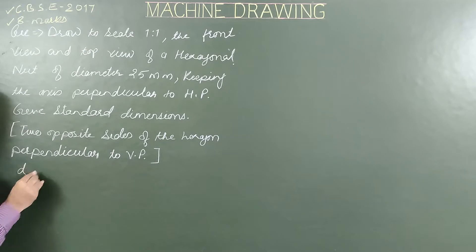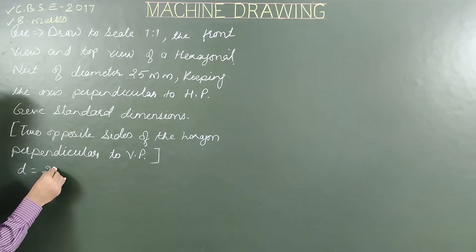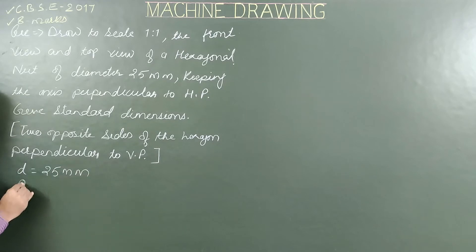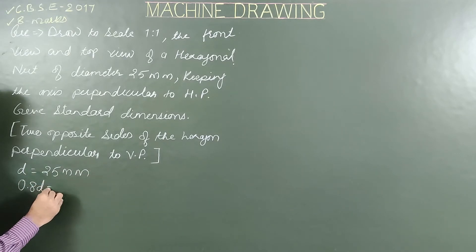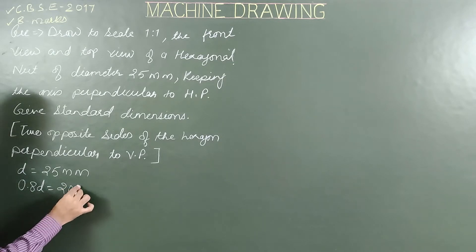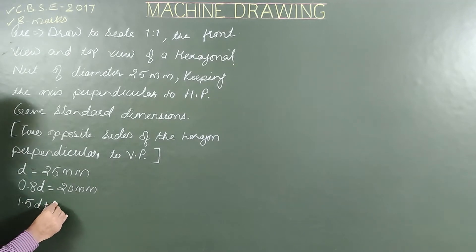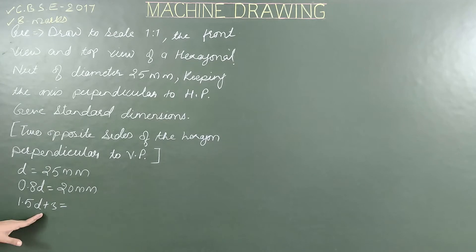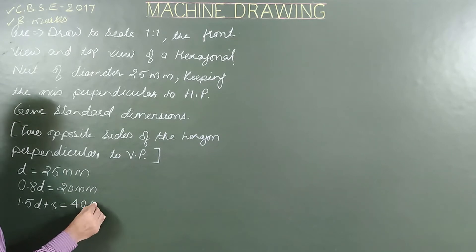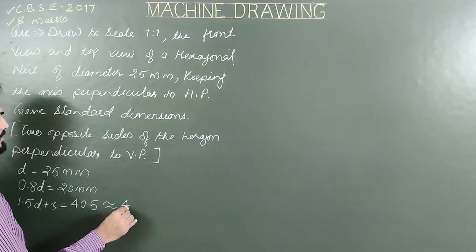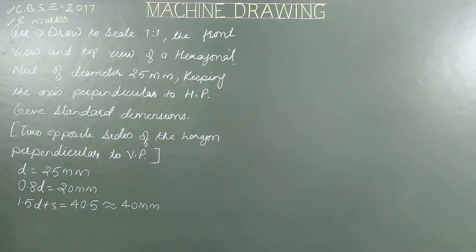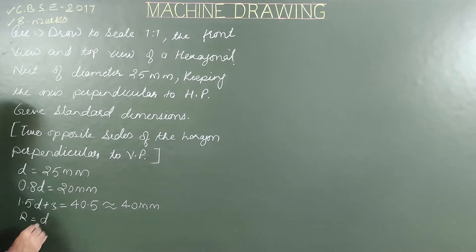First, we calculate all standard dimensions. Given diameter D = 25mm. Then 0.8D = 20mm. Next, 1.5D + 3 = 40.5, approximately 40mm — this is the diameter of the chamfering circle. And last, the radius of chamfering equals D, so radius = 25mm.